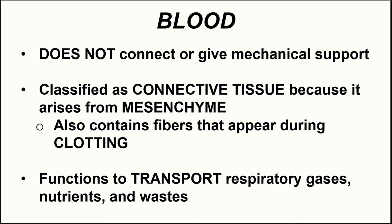Blood is probably the most unusual of the connective tissues because it does not connect parts of the body in any physical way, and it does not give any type of mechanical support or protection. It is classified as a connective tissue because it arises from that embryonic connective tissue called mesenchyme. It has cells, an extracellular matrix, and it contains fibers — though the fibers are not typically visible in the extracellular matrix until clotting happens, becoming apparent during blood clotting when healing wounds.